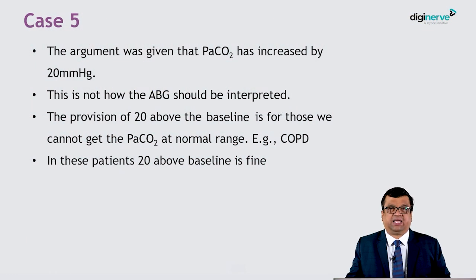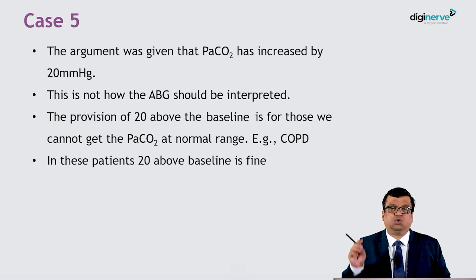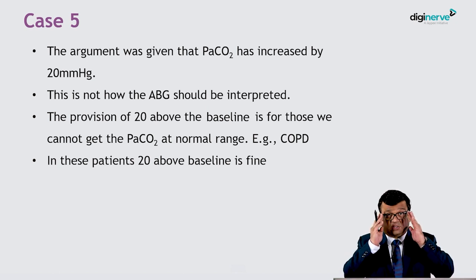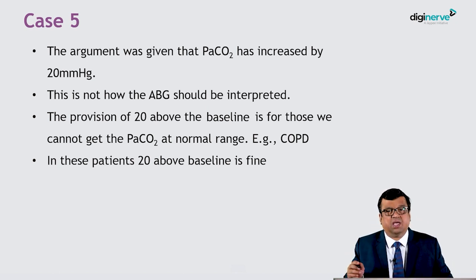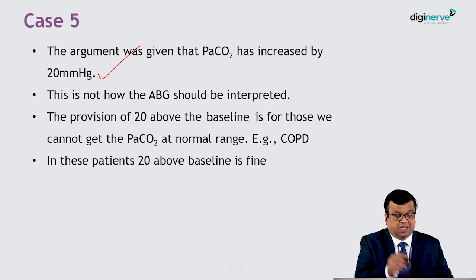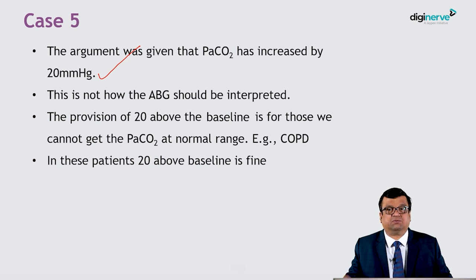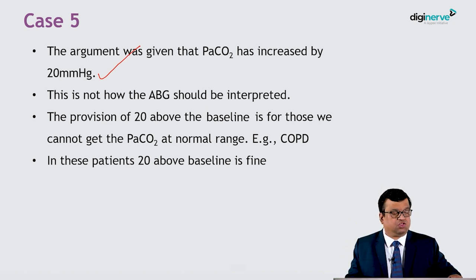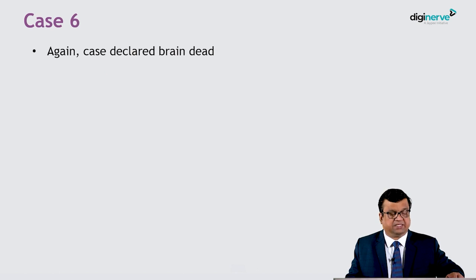The CO2 above 20 from the baseline is only true for patients who have CO2 retention. If you do not have CO2 retention, you need to target a PCO2 between 35 and 45. However, for those who have CO2 retention — say the best you can bring it down to is 50 — in those patients we need to target above 20 from that baseline, which would be 70. These are the finer, intricate details and finesse you need to understand to do this test and interpret the results correctly.